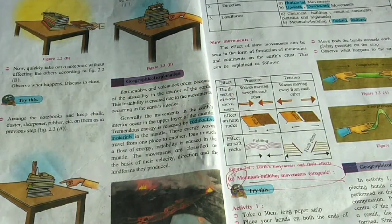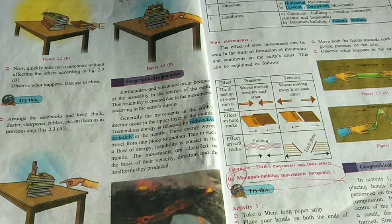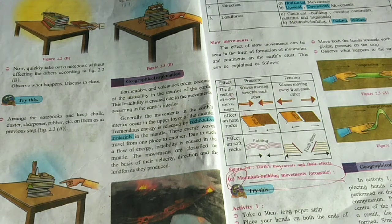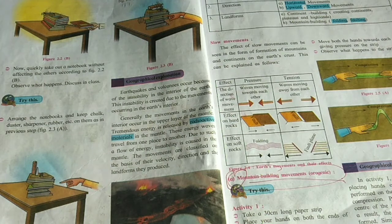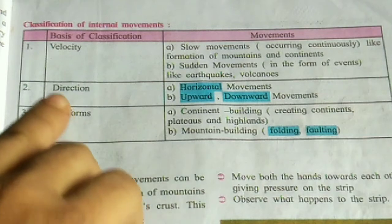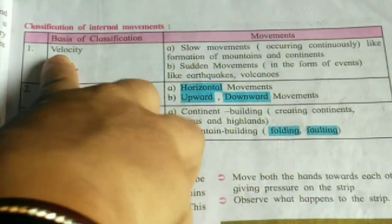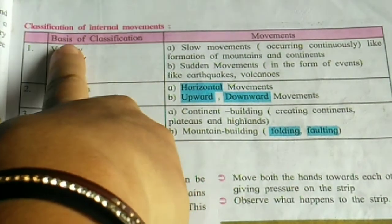Generally, movements in the earth's interior occur in the upper layer of the mantle. Tremendous energy is released by radioactive material in the mantle. These energy waves travel from one place to another. Due to such a flow of energy, instability is caused in the mantle. The movements are classified on the basis of their velocity, direction and the landforms they produce.